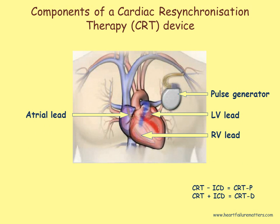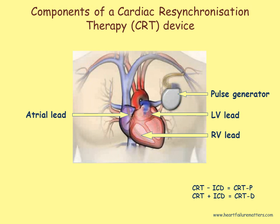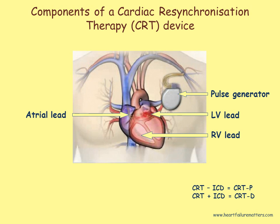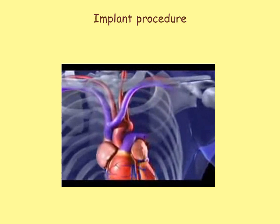The CRT device consists of a pulse generator, or pacemaker, and three leads that are placed into the heart via the left subclavian vein. The first lead is placed in the right ventricle, the second lead is placed in the right atrium, and the third lead is threaded through the coronary sinus and placed posteriorly on the epicardium in a posterolateral coronary vein. A CRT device without an ICD or defibrillator is termed a CRTP. A CRT device incorporating an ICD is termed a CRT-D.